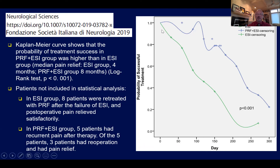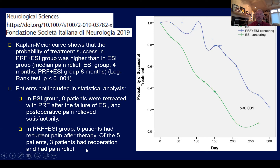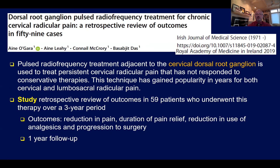The Kaplan-Meier curve from the same paper shows that the probability of treatment success was much higher in the epidural group combined with pulsed radio frequency compared to epidural alone. When pulsed radio frequency was added to the cervical epidural steroid injection, the probability of treatment success was substantially higher. In the epidural steroid injection group alone, eight patients were retreated with pulsed radio frequency after steroid injections failed. In the combined pulsed RF and cervical epidural group, only five patients had recurrent pain, and three patients required an additional procedure.